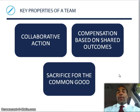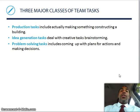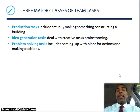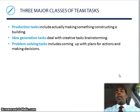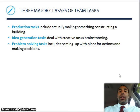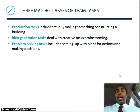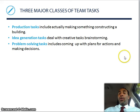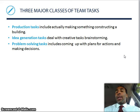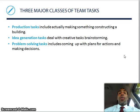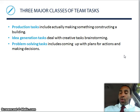Key properties of a team include collaborative action, compensation based on shared outcomes, and sacrifice for the common good. There are three major classes of team tasks: production tasks — actually making something, constructing a building; idea generation tasks — creative brainstorming, coming up with great ideas; and problem solving tasks — coming up with plans for action and making decisions. All three can be very applicable to you in the workplace.